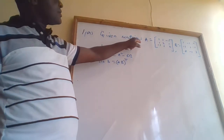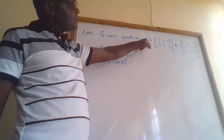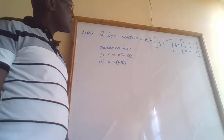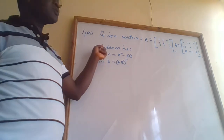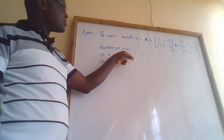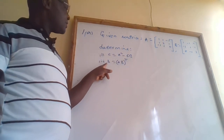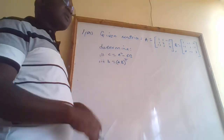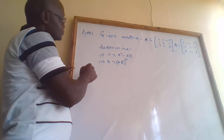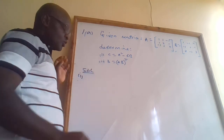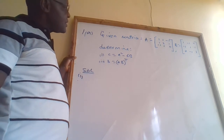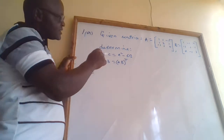Given matrices A and B with the given elements, we want to determine C equals A squared minus 6B, and D equals AB transpose. We start with Roman numeral one: find A squared minus 6B.